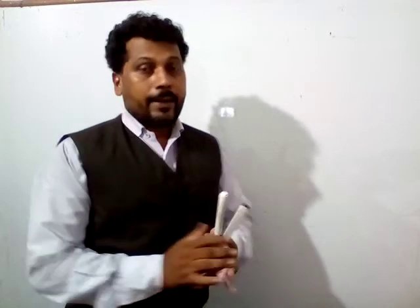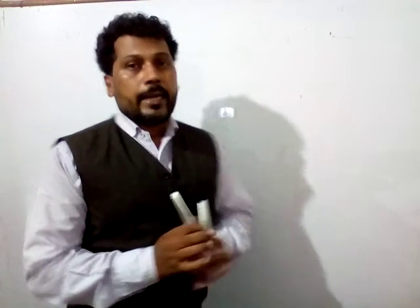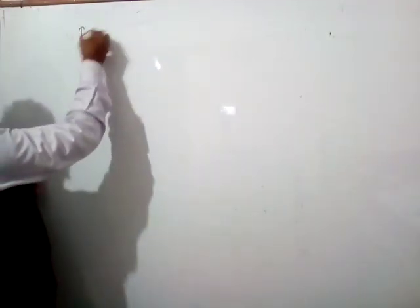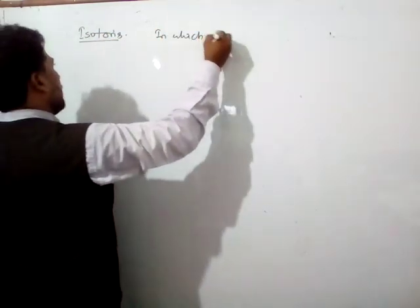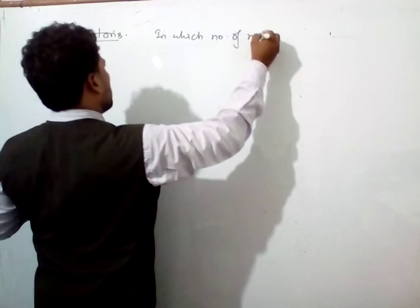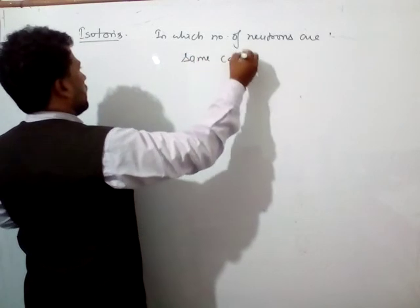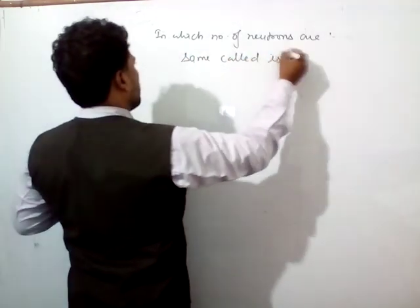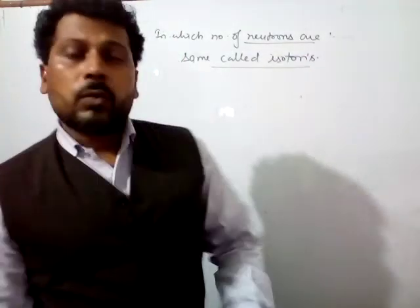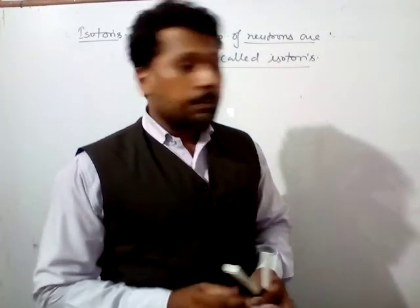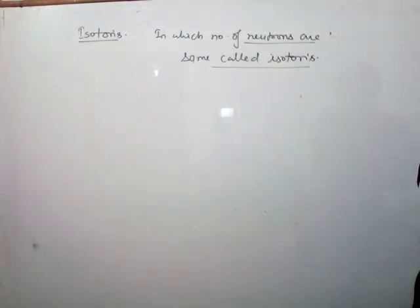In the same way, isotones. So those atoms in which number of neutrons are same are known as isotones. In which number of neutrons are same are isotones, in which number of neutrons is equal. Number of neutrons is isotones.